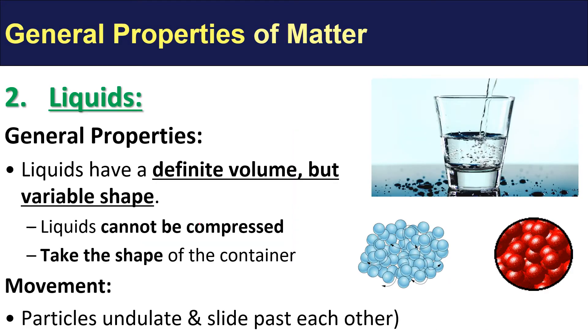Liquids have the general properties of having a definite volume but a variable shape, and you know that because you have poured drinks into many cups of different sizes and beakers throughout your journey in science. Liquids cannot be compressed; they also have very little space between the particles, if any. In terms of their movement, they are going to be undulating and moving past one another like this.